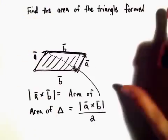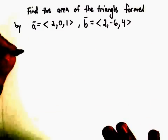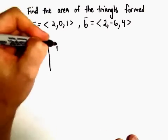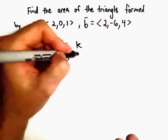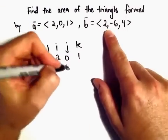Alright, so the first thing I'm going to do is find the cross product, A cross B. So to do A cross B, we've got I, J, K. Vector A has components 2, 0, 1. Vector B has components 2, negative 6, 4.